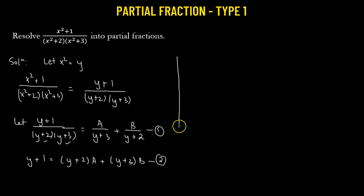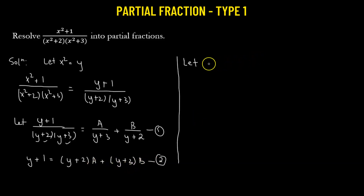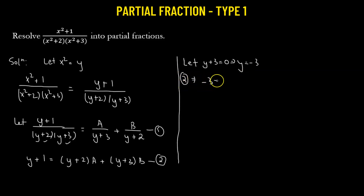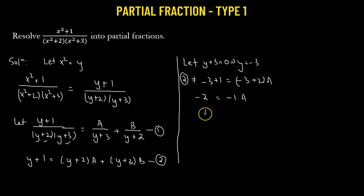We will find the values of A and B by using specific values of y. To find A, we make the second term go to zero by setting y + 3 = 0, or y = -3. Substituting into equation 2: -3 + 1 = (-3 + 2) × A, giving -2 = -1 × A, so A = 2.